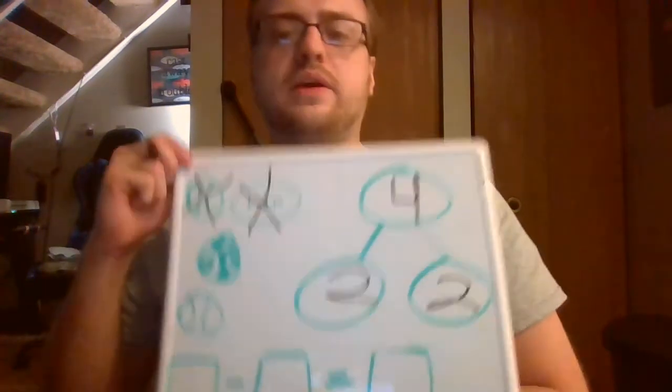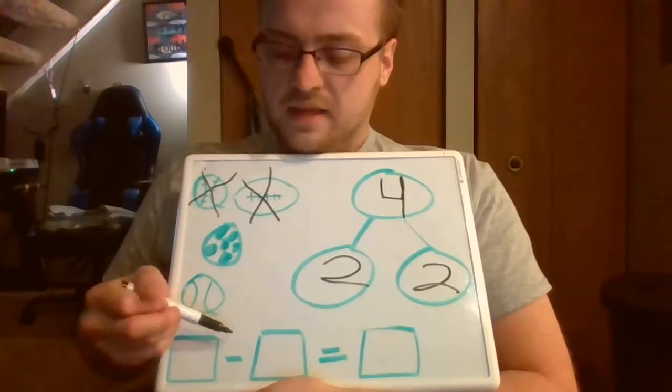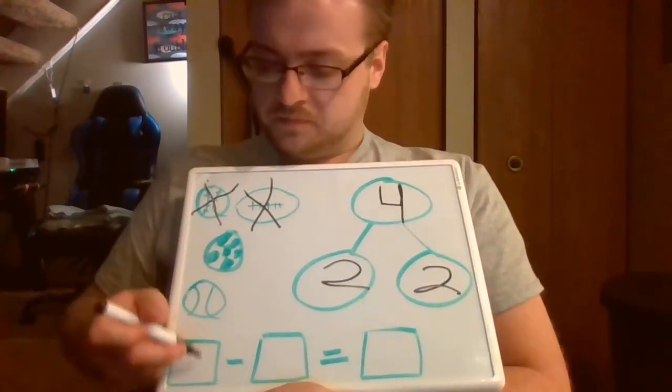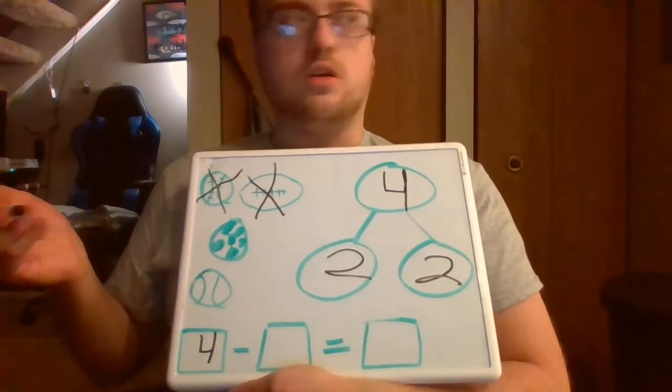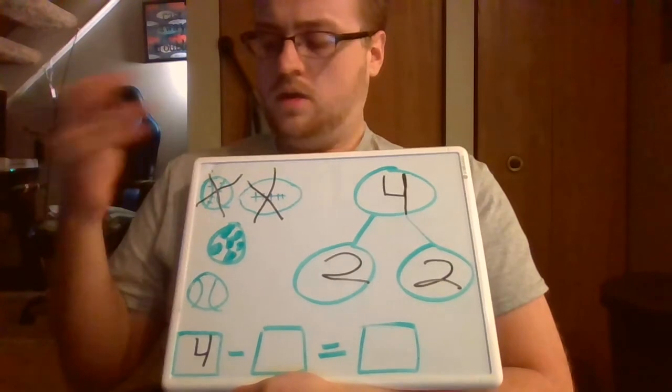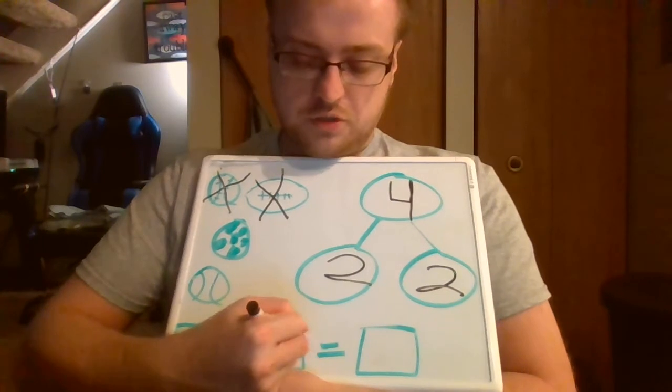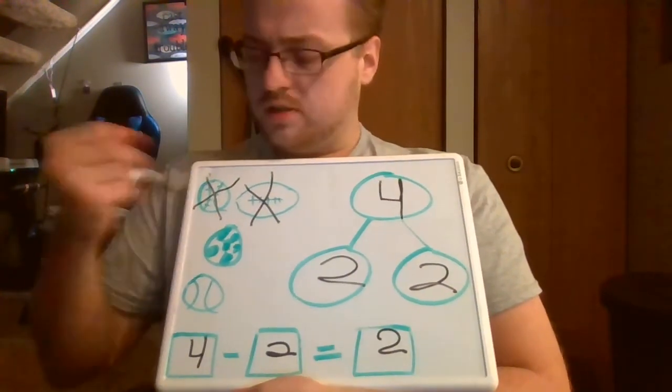Now we are going to put this into our number sentence. Remember, this is our minus sign, and this is our equal sign. We're going to put our four over here because that's how many balls we started with. We lost two balls when we were playing, so we put a two there, and then equals two because we have two balls left over.